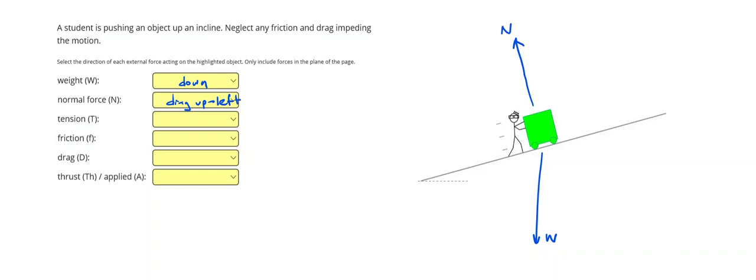We don't have a tension. We are neglecting friction and drag. But we have a person actively touching the box. And if they're touching the left side, that means they're pushing it diagonally up to the right or up the hill. And we can call this an applied force or thrust. And that's it.